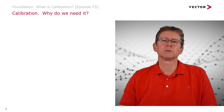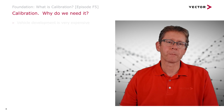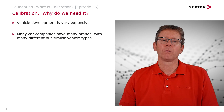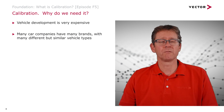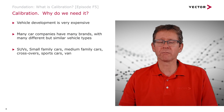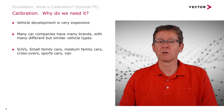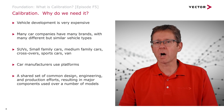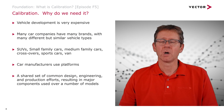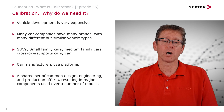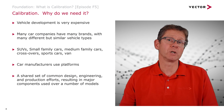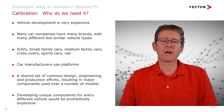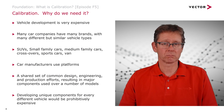So why do we need calibration when developing a car or a component? Vehicle development is very expensive. Many car companies have brands with different but very similar vehicle types — SUVs, small and medium family cars, crossovers, sports cars, vans. Car manufacturers use platforms: shared designs, engineering, and production efforts resulting in major components used over a number of models, so we don't have to develop them individually for each vehicle. Developing unique components for every different vehicle would be prohibitively expensive, so we use platforms.